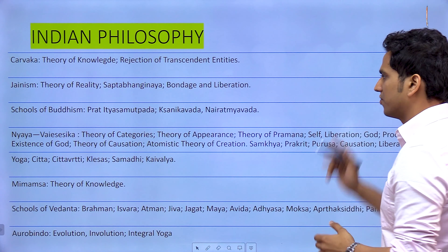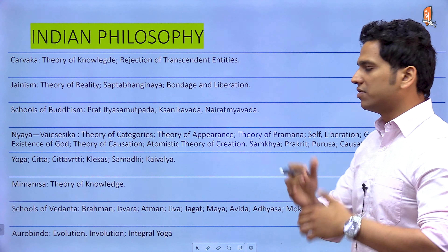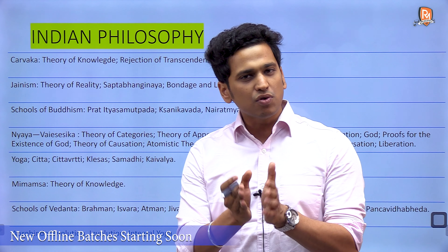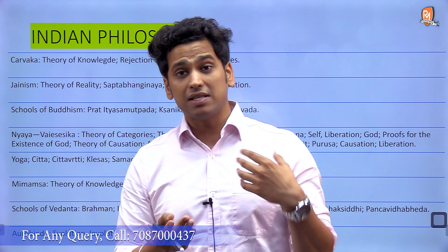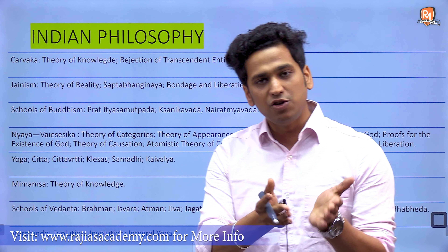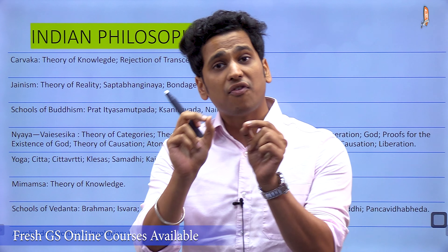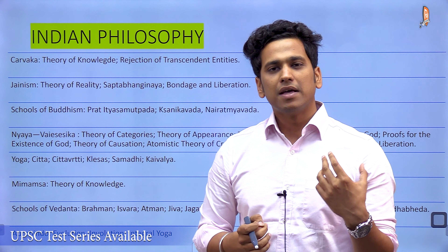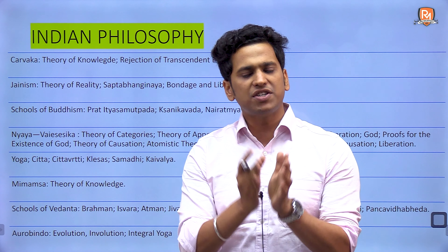Moving to Indian philosophers in Paper 1, we have the philosophy of Charvakas, Jainism, schools of Buddhism, then Nyaya-Vaisheshika, Yoga, Mimamsa, schools of Vedanta, and finally Aurobindo. There is quite an overlap with GS paper subjects through philosophy optional — it helps in topics like ancient and medieval culture. In UPSC 2023 prelims, there was a specific question on the philosophy of Jainism, showing how these topics connect with the main GS papers.